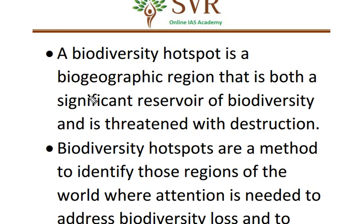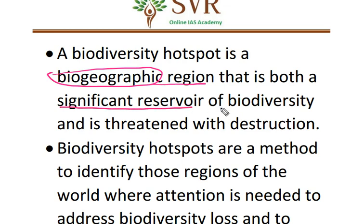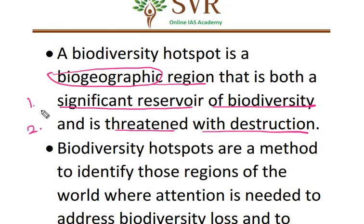A biodiversity hotspot can be defined as a biogeographic region that has a significant reservoir of biodiversity and is threatened with destruction. Two points you must write while defining a biodiversity hotspot: it is the biogeographic region that has a significant reservoir of biodiversity, and still biodiversity is at its maximum in a biodiversity hotspot.